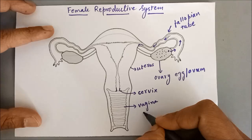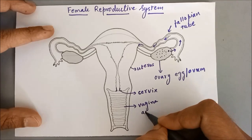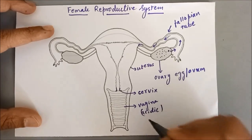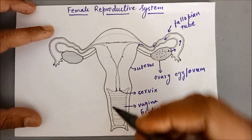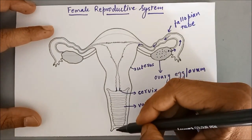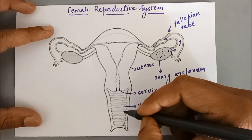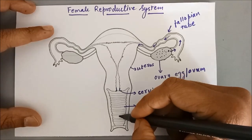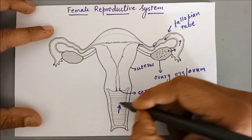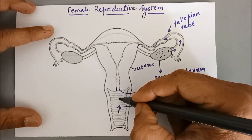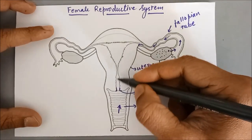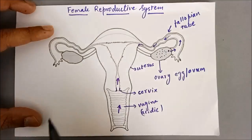Vagina is acidic in nature. It contains acidic liquids, and thus during intercourse when semen is ejaculated here, the sperms and semen travel ahead through this pathway.